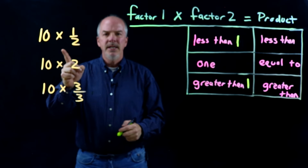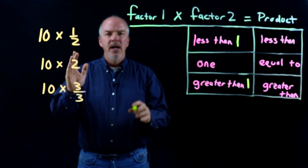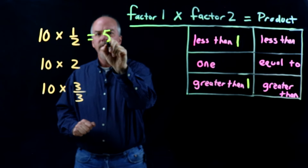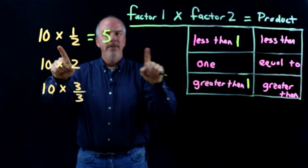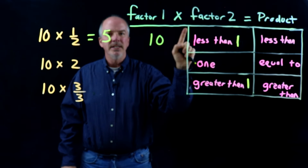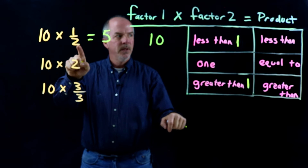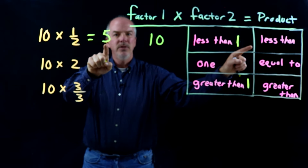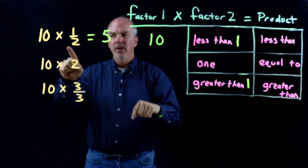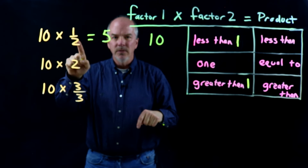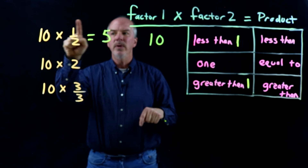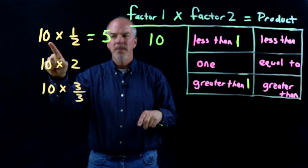So, 10 times 1 half. I know that 10 times 1 half is 5. If I multiply 10 — which is my first factor — times a factor that's less than 1 (which is 1 half), then my product or my answer will be less than my first factor of 10. So I went from 10, multiplied by a factor less than 1, and my product is less than what I started with, which was 10.